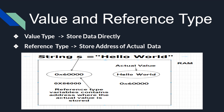A value type means we are storing the value directly into memory. A reference type means we are storing the address of the memory location in which the value is held. For example, from the figure below, S is a string type holding the value 'hello world'. If it is a value type, the S memory block directly holds 'hello world'. But in the figure it shows reference type, where S holds the address of another memory location where the actual 'hello world' is stored.